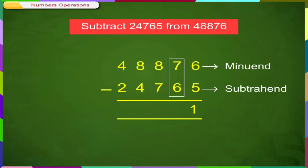Then the smaller number. 48,876 minus 24,765, and subtract place wise. First of all 1's, then 10's, then 100's, then 1000's, and then 10,000. And in this way,